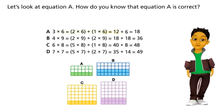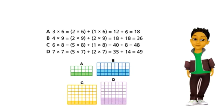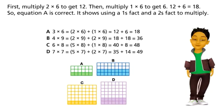Let's look at equation A. How do you know that equation A is correct? First, multiply 2 times 6 to get 12. Then, multiply 1 times 6 to get 6.